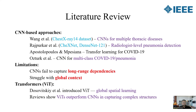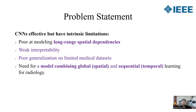Despite their success, CNNs have two key limitations: they fail to capture long-range spatial dependencies and lack global contextual understanding. Recently, Vision Transformers introduced by Dosovitskiy et al. have shown strong potential in capturing global image features, outperforming traditional CNNs in many cases. The main problem identified in this study is that CNN-based models are effective but limited in modeling long-range spatial relationships.